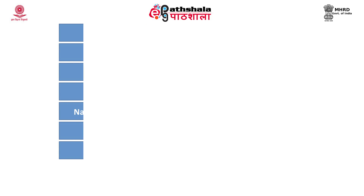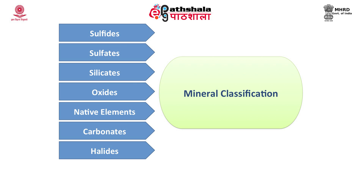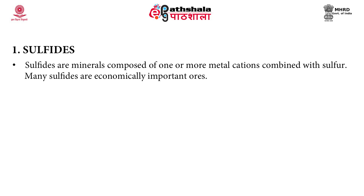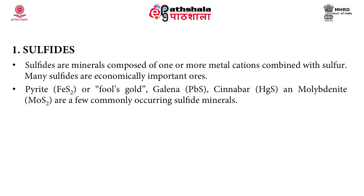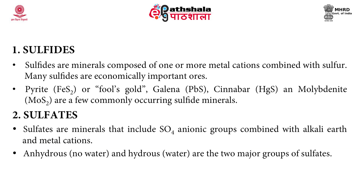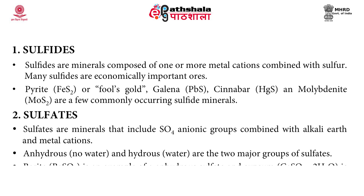Now let's see the classification of minerals. Minerals can be classified into sulphides, sulphates, silicates, oxides, native elements, carbonates and halides. Sulphides are minerals composed of one or more metal cations combined with sulphur; many sulphides are economically important ores. Pyrite or fool's gold, galena, cinnabar and molybdenite are a few commonly occurring sulphide minerals. Sulphates are minerals that include sulphate anionic groups combined with alkali, earth and metal cations. Anhydrous and hydrous are the two major groups of sulphates; barite is an example of anhydrous sulphate and gypsum is an example of hydrous sulphate.